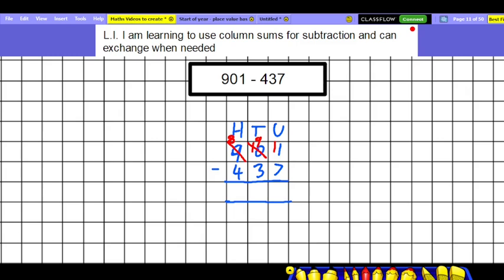But at last, we're down at the units and we've got a manageable sum. We've got 11 take away 7. Well, we can do that. That's 4. And rather pleasantly, now that we've done that, the rest of the sums are all manageable too. 9 take away 3. That's 6. And 8 take away 4. That's 4. And so we get our answer, 464.